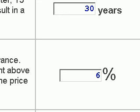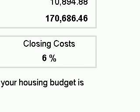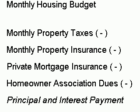Now that we've entered all of our information, we can get our results. This calculator subtracts out all of our expenses and comes up with a principal and interest payment. So: our monthly housing budget minus property taxes, minus insurance, minus private mortgage insurance, minus HOA dues equals our principal and interest payment. Our housing budget is $1,800, monthly property taxes $190, monthly property insurance $120, private mortgage insurance $127, homeowners association dues $100 — that leaves $1,251.47.